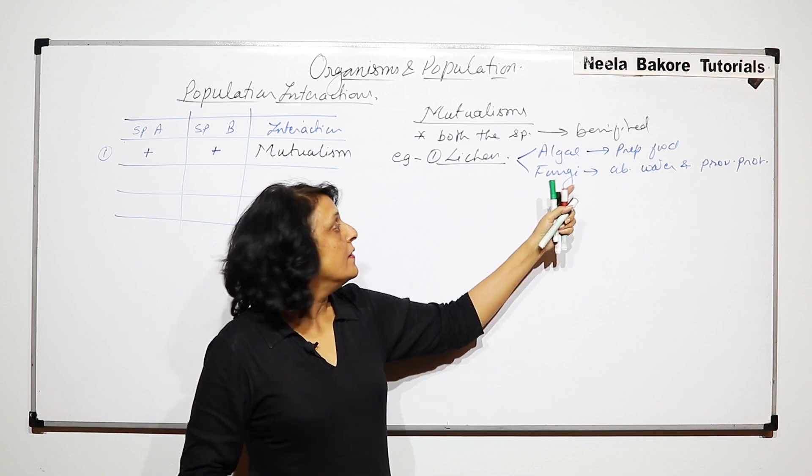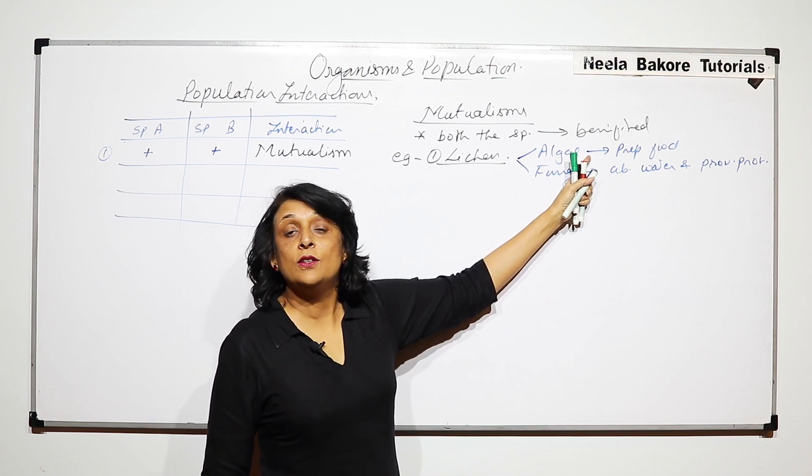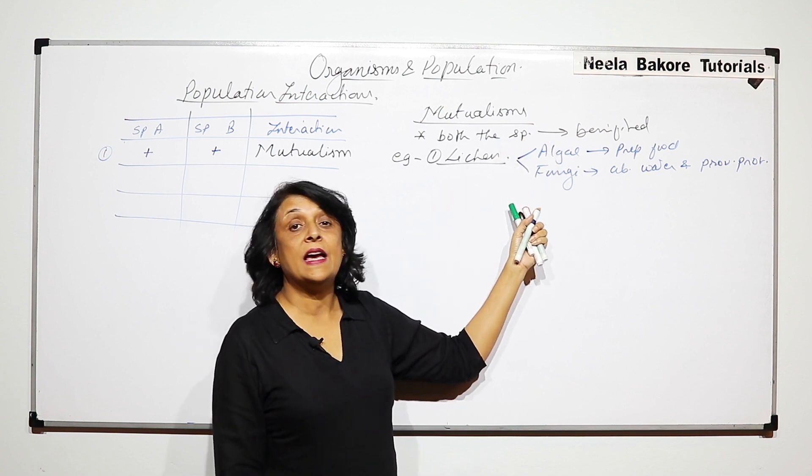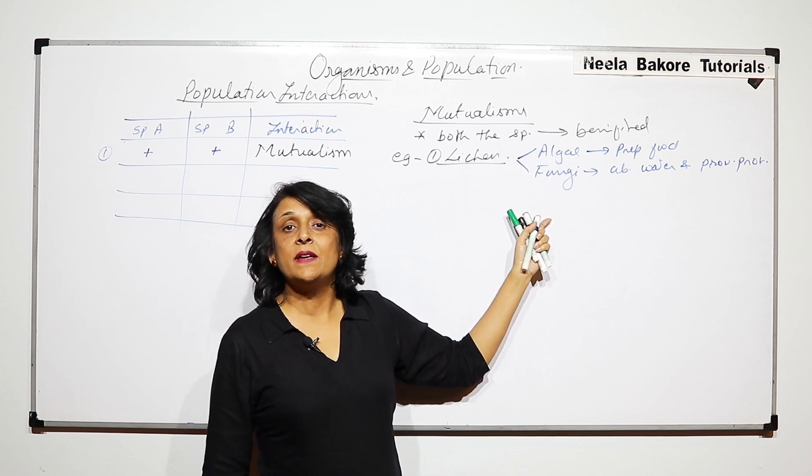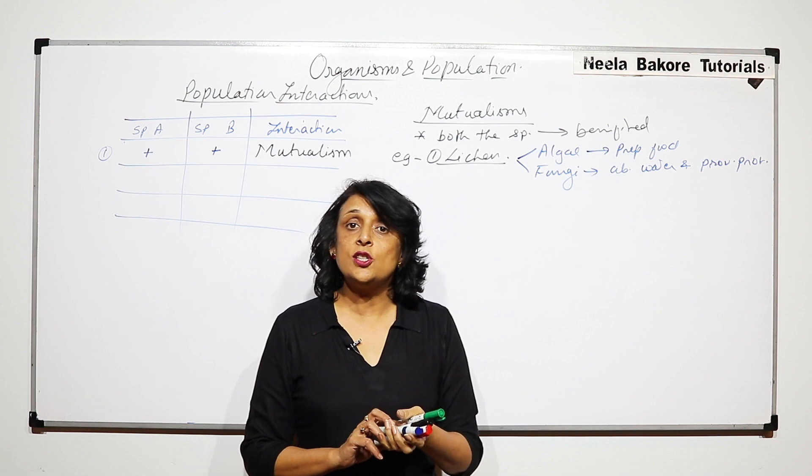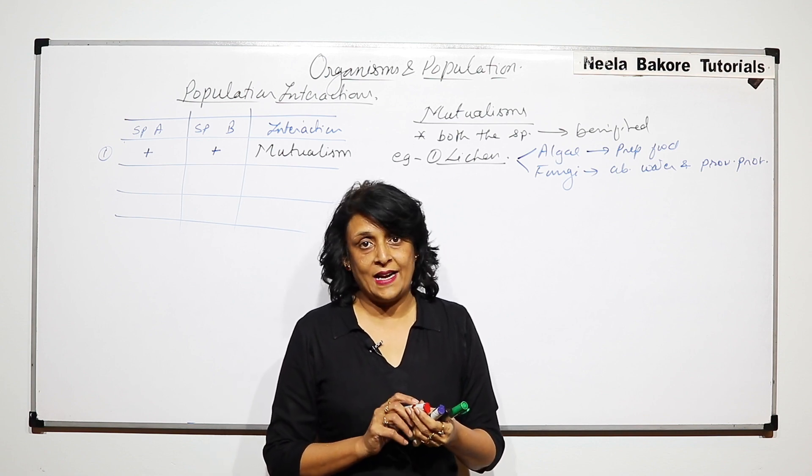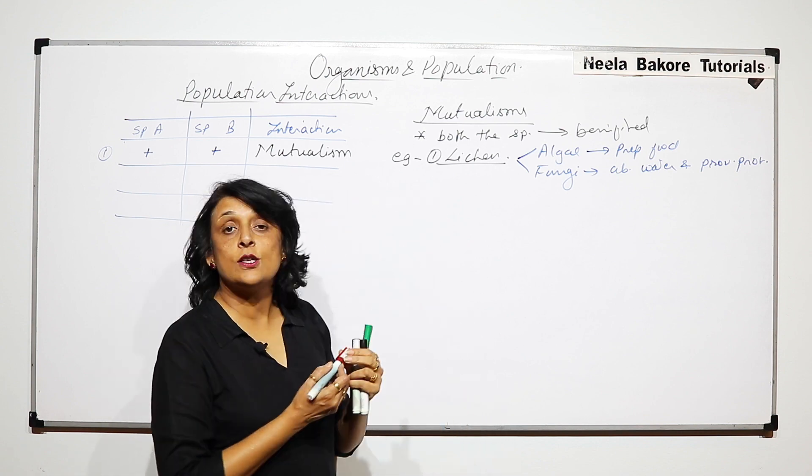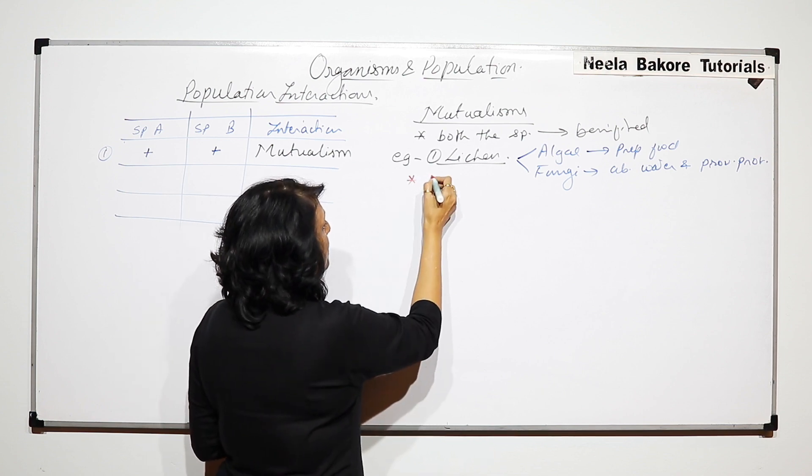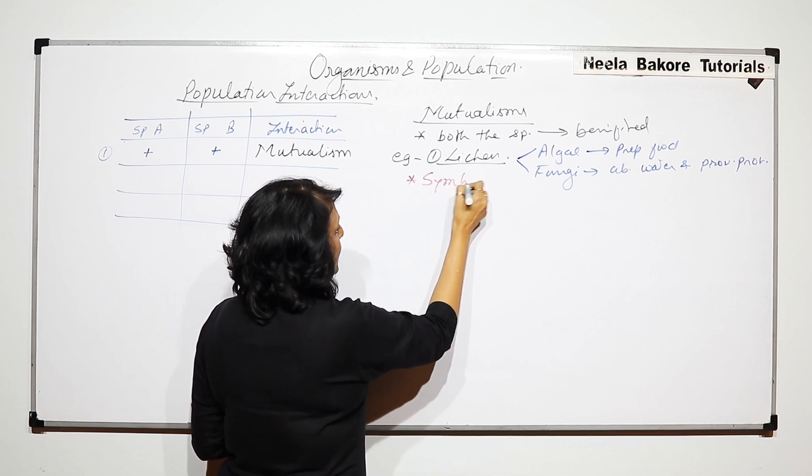And in turn, the fungus would get the food which is prepared by algae because fungi are saprophytes. They cannot make their own food. Now such type of mutual interaction which is seen in case of lichens has been given one term that is symbiosis.